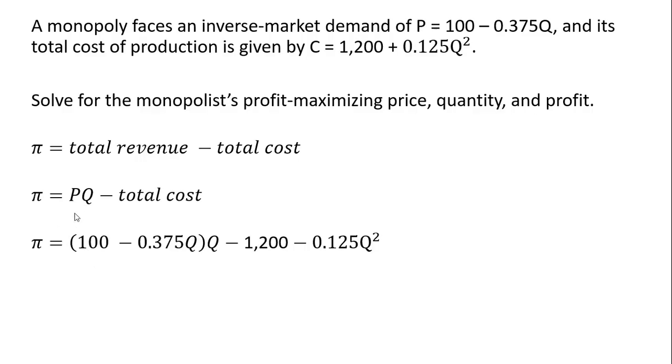So moving on to the next step, what is price? Price is 100 minus 0.375Q, so that's in parentheses right here. And then we have this being all multiplied through by Q. And then total cost, so we're going to subtract out the fixed cost of $1,200.